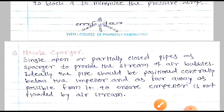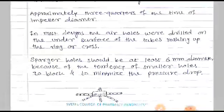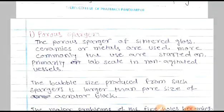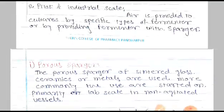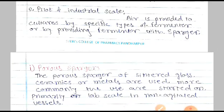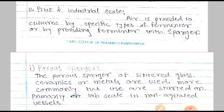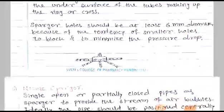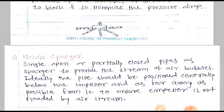In this lecture we have seen what is the aeration process and what are the types of sparger. The equipment used for aeration is the sparger, and there are three types: first is the porous sparger, second is the orifice sparger, and third is the nozzle sparger. This is the process of aeration in fermentation.